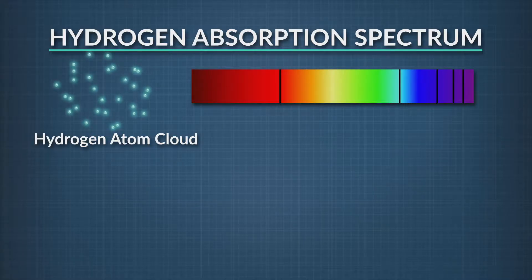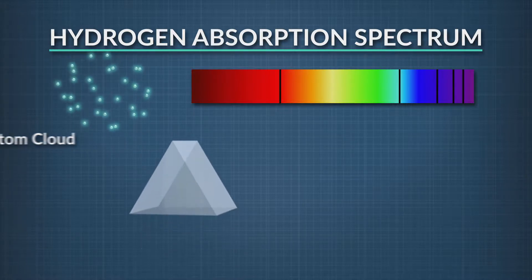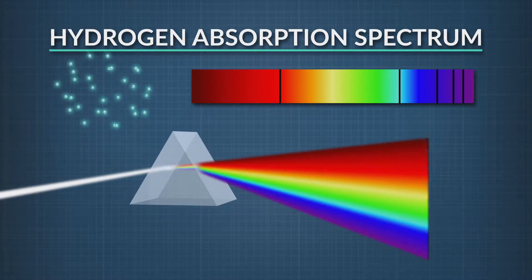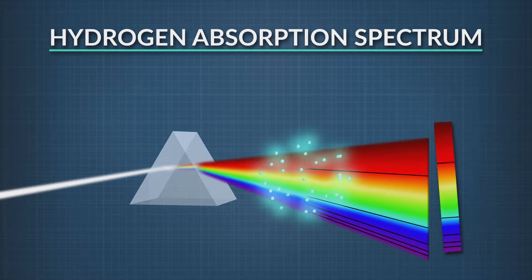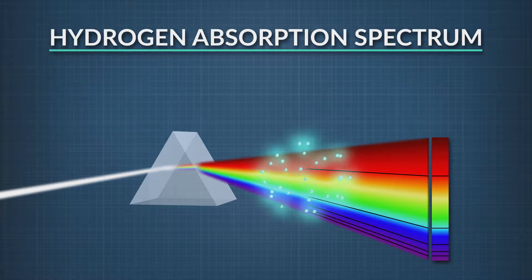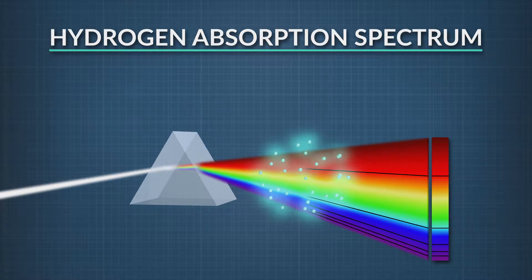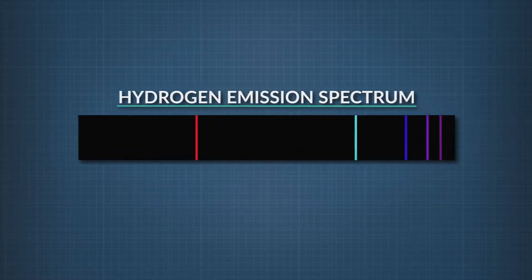Every element has two different kinds of color spectra. One is called the absorption spectrum, which is created when light strikes an atom and its electrons move from lower to higher energy levels. In this image of the hydrogen absorption spectrum, you can see some wavelengths of light are absorbed by the electrons, leaving black lines in the spectrum. The other kind of spectrum is the emission spectrum. Here's what hydrogen's emission spectrum looks like.